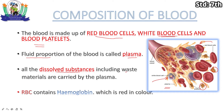All dissolved substances including waste in our body are carried by plasma. We need nutrients in our body to be transported through blood, and the waste material excreted by cells is also carried out through blood.